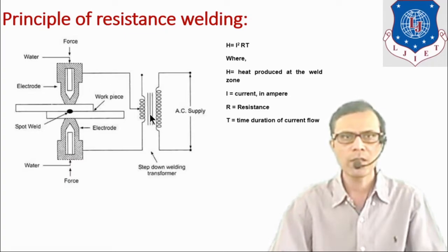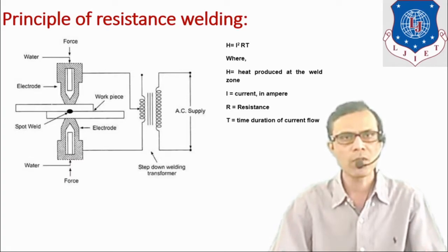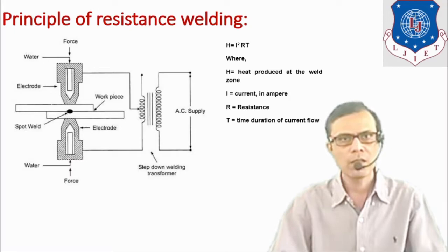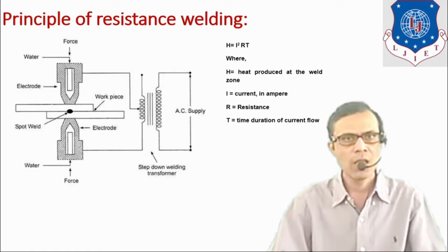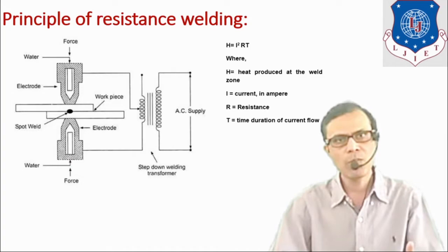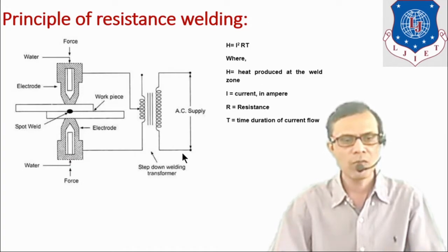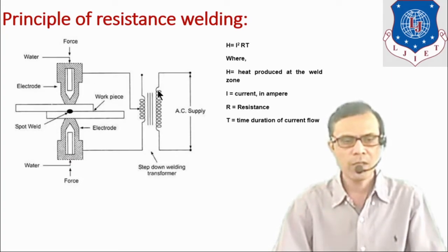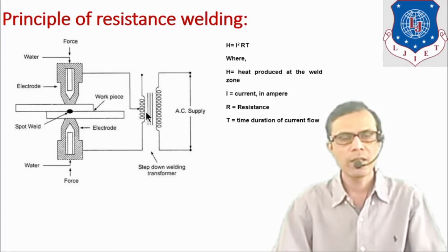A step-down transformer is used, which decreases the supply voltage — generally it ranges from 4 to 12 volts — and by that way increases the current flowing through the circuit. Generally its value can be up to 10,000 amperes for welding purpose, though maximum values can go up to 50,000 amperes. So by using this transformer we are decreasing supply voltage and increasing current flow.